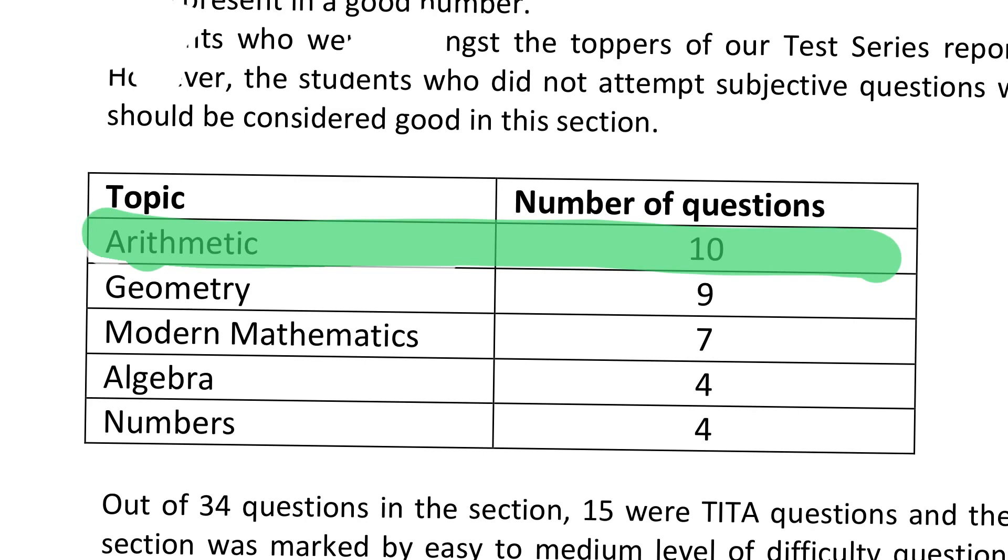By arithmetic we mean percentages, ratios, and all the allied topics like profit and loss, partnership, mixed delegation, averages. All the arithmetic-based chapters in CET King book, chapter 1 to chapter 15, all the arithmetic-based questions which contain a percentage sign or a ratio sign. There will be 10 questions.